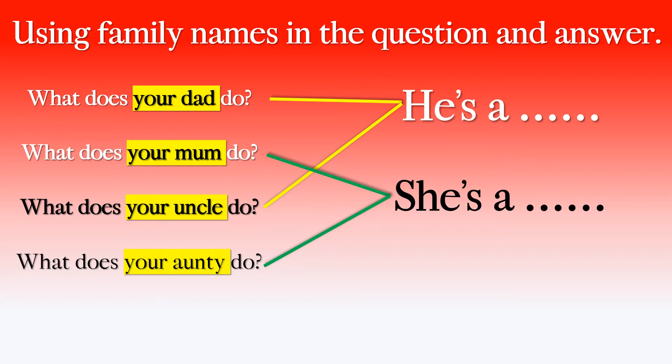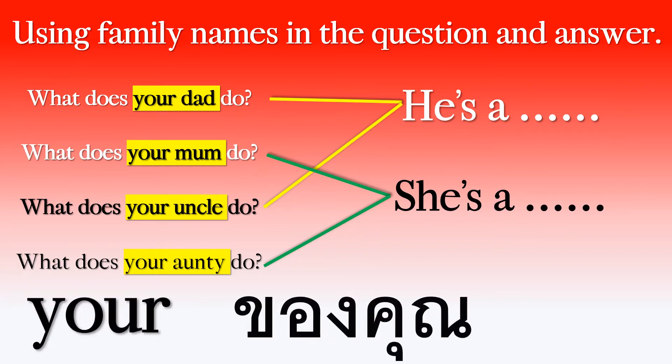So we use the word 'your' and then the name of the person in the family. We use the word 'your' — it's your dad, not my dad, not your teacher's dad, not your friend's dad. Your dad, your mum, your uncle, your auntie. So we don't say 'you', we say 'your'. OK, cool.